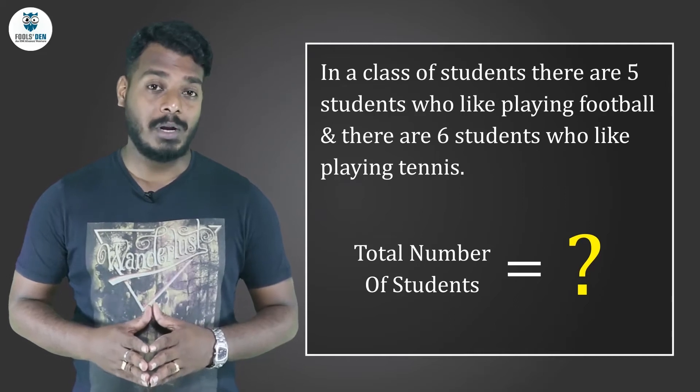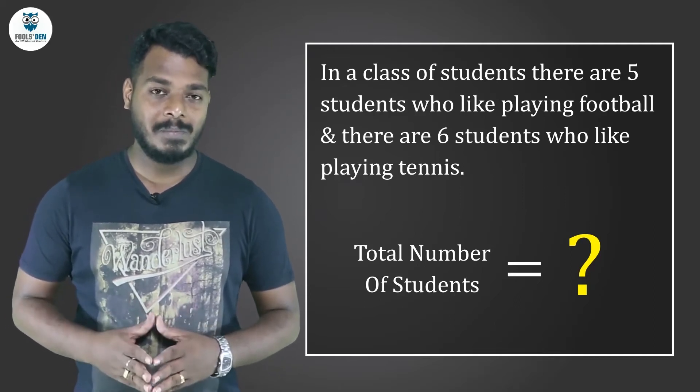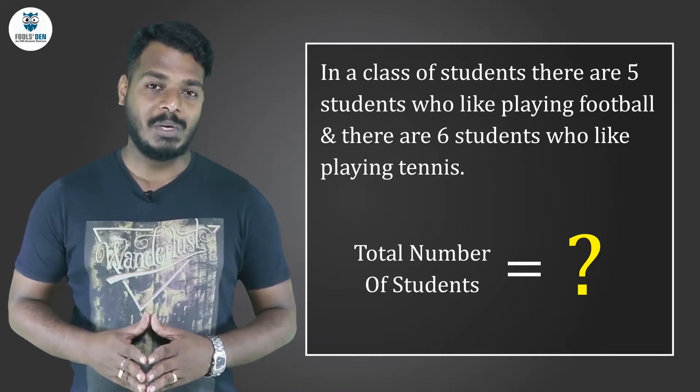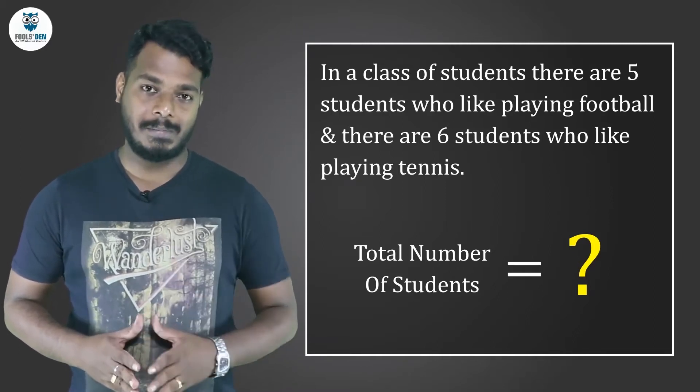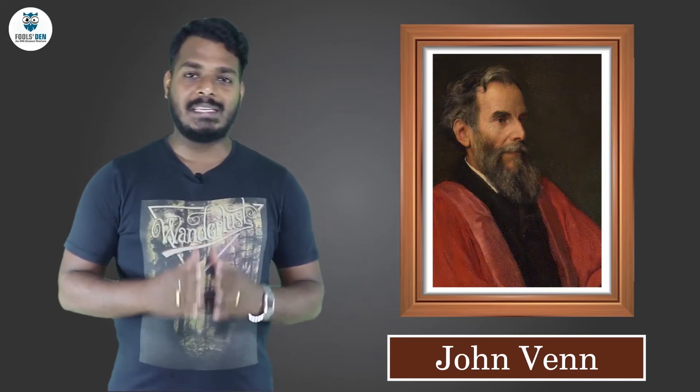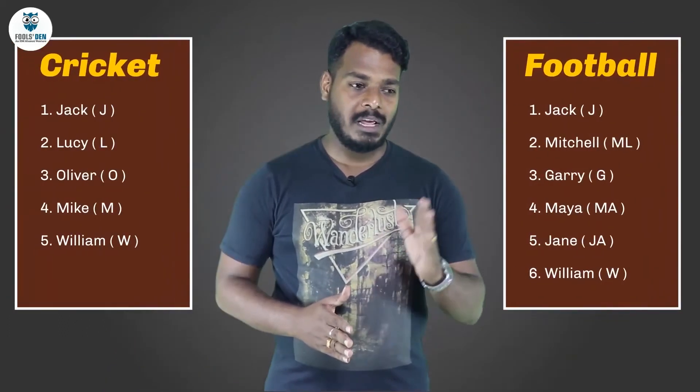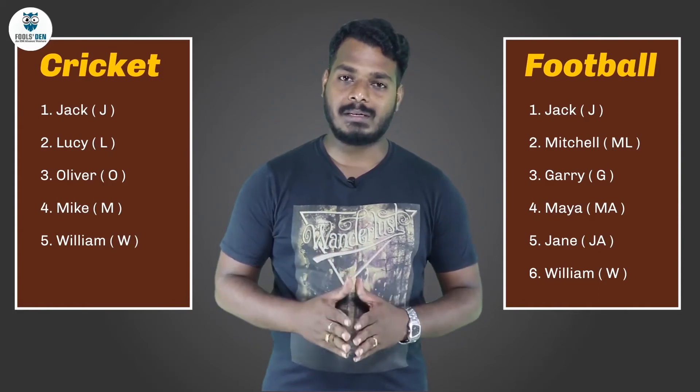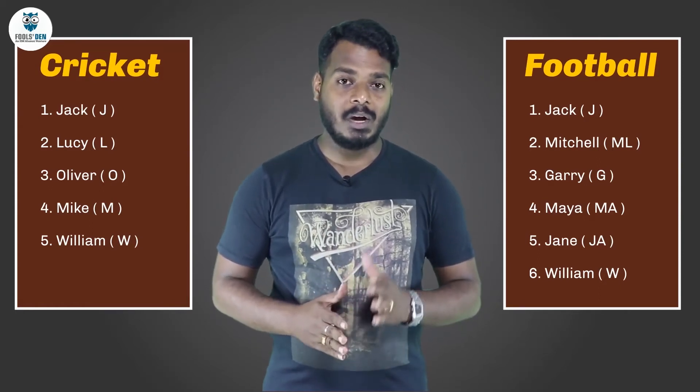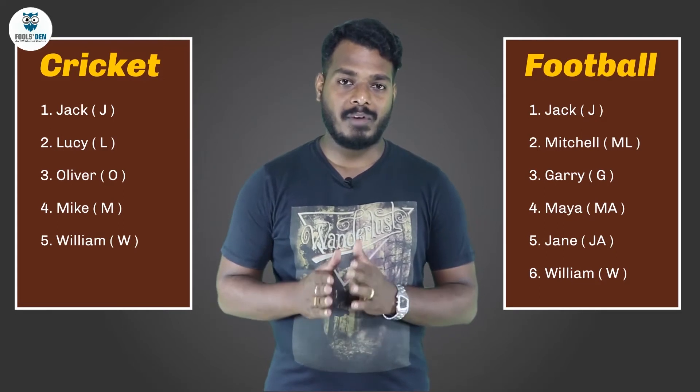Puzzled? To answer this question, let me take you back in time to 1880. Can you see this man on screen? He's a famous logician, philosopher, and teacher — John Venn. This story dates back to 1880 when John Venn was in Cambridge, England, interacting with a group of nine students. He asked the students to submit a list of those who liked playing football and those who liked playing cricket, and astonishingly he got a list of six students for football and five for cricket.